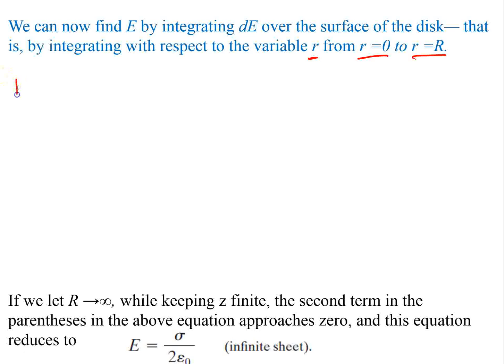So let's go and start plugging this stuff in. So we have E is equal to the integral of dE, which is equal to sigma z divided by 4 epsilon naught. And then we're going to take the integral of everything else. So it's 2πr dr divided by z squared plus r squared.